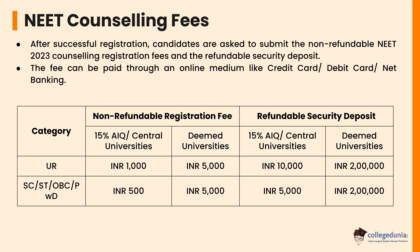For 15% AIQ or central universities, the non-refundable registration fee for the unreserved category is INR 1,000, while for SC, ST, OBC, and PWD categories it is INR 500. For deemed universities, the non-refundable registration fee is INR 5,000 for all categories. For 15% AIQ or central universities, the refundable security deposit is INR 5,000 for all categories. For deemed universities, the refundable security deposit for SC, ST, OBC, and PWD categories is INR 2 lakh.